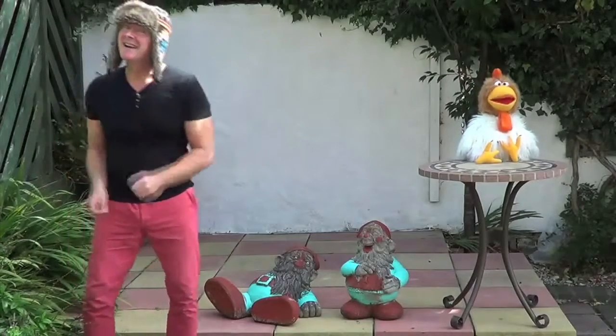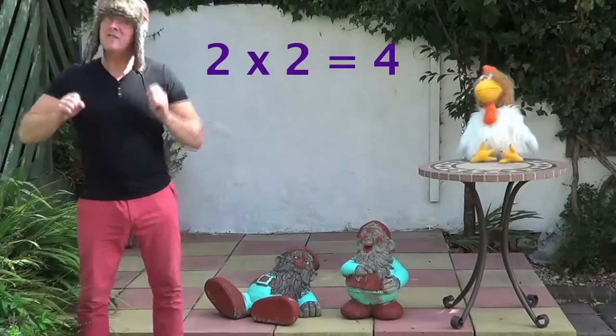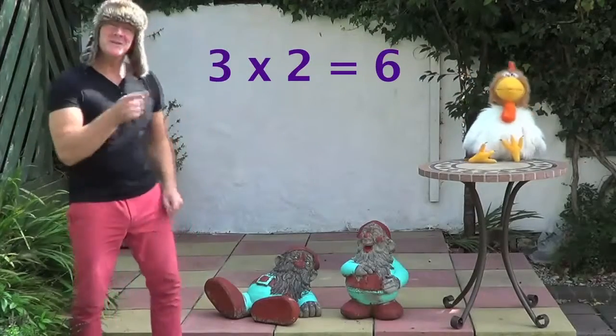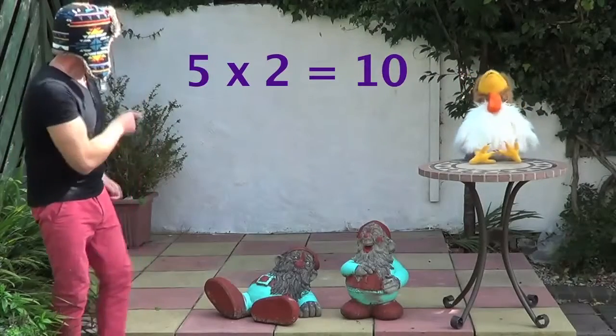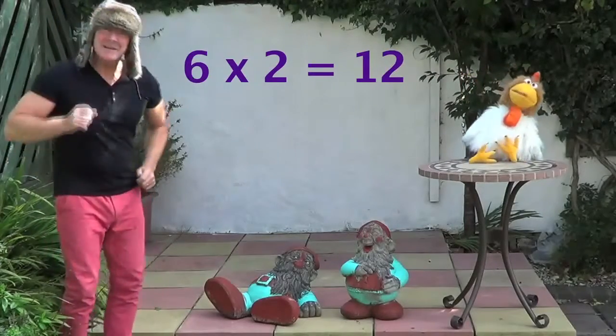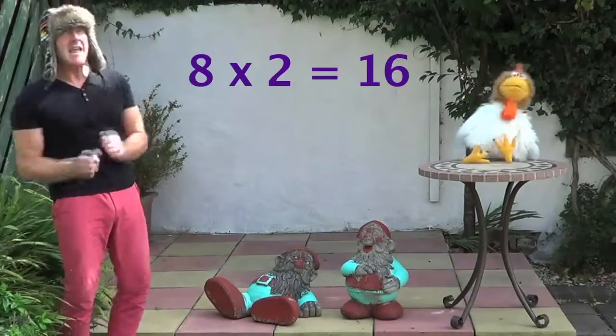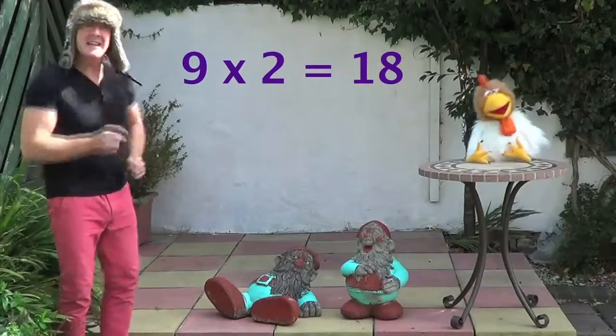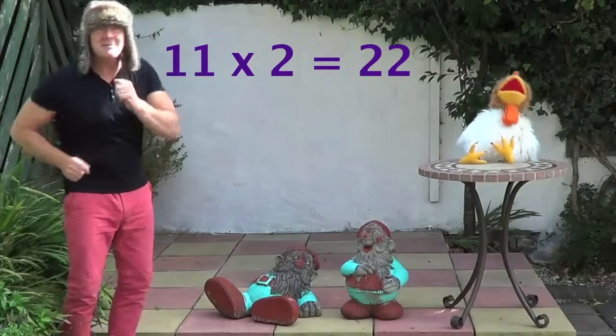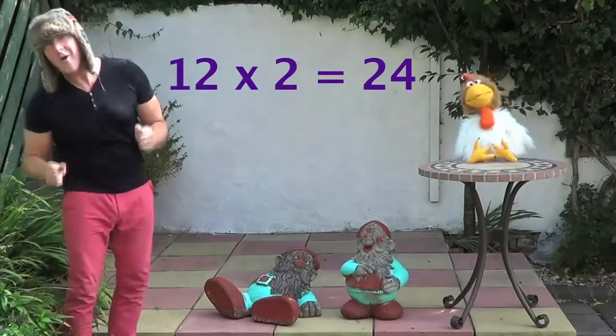Ready, I'm waiting Jingle Jeff! 1 x 2 is 2, 2 x 2 is 4, 3 x 2 is 6, 4 x 2 is 8, 5 x 2 is 10, 6 x 2 is 12, 7 x 2 is 14, 8 x 2 is 16, 9 x 2 is 18, 10 x 2 is 20, 11 x 2 is 22, 12 x 2 is 24.